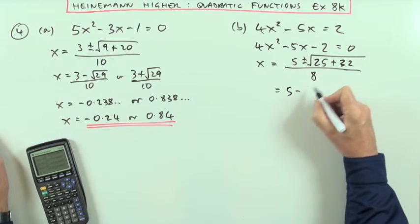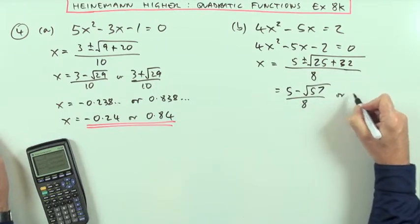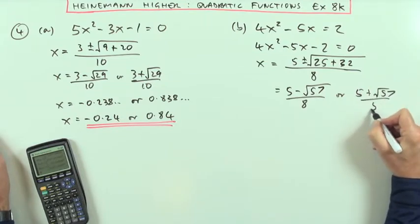So my two answers are going to be 5, either take away root 57, root 57 upon 8, or 5 plus the root 57 upon 8.